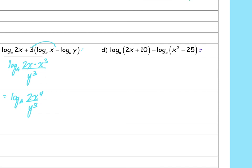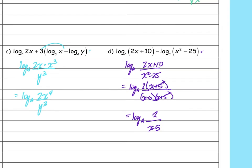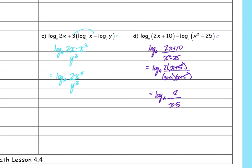Factoring those expressions: log base a of 2 times (x plus 5) over (x minus 5)(x plus 5). The (x plus 5) terms cancel, leaving log base a of 2 over (x minus 5). That was a tough one. The problems on your Delta Math homework are more straightforward — you likely won't see anything that complex there.